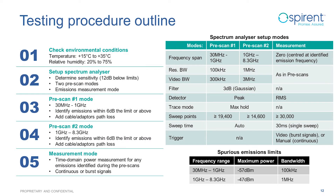In this final slide I will talk about the measurements and analysis needed to determine if we pass the spurious emissions test. The first task is to check the environmental conditions: the temperature must be between 15 and 35 degrees Celsius and relative humidity between 20 and 75%. The second task is to set up the spectrum analyzer. We need to perform measurements in both the frequency and time domains. There are two pre-scan measurements in the frequency domain to identify significant spurious emissions, and then measurements in the time domain to measure the power of the identified spurious emissions.